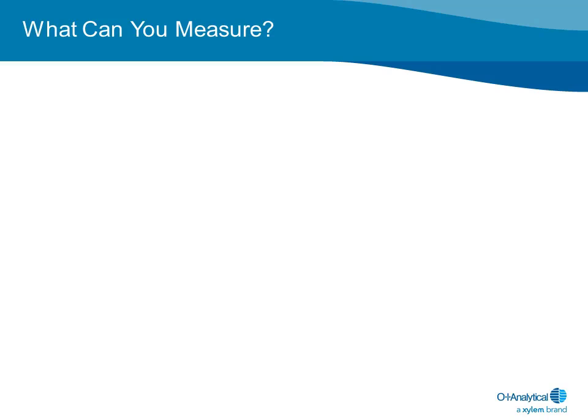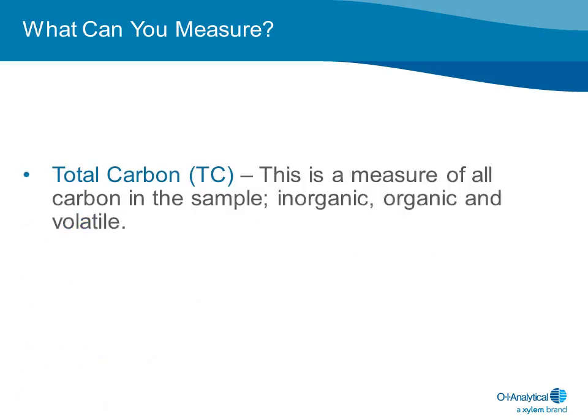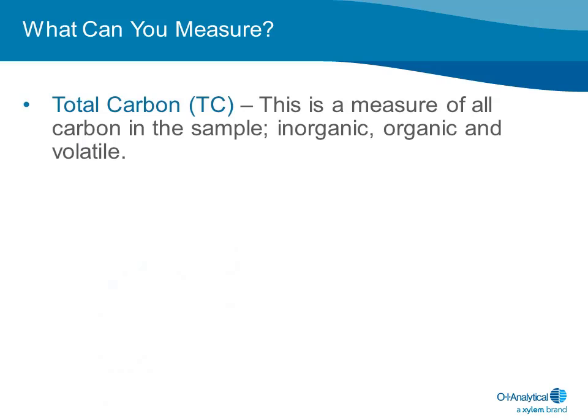What can you measure with a TOC analyzer? Total carbon is the sum of all carbon in a sample and is comprised of three distinct fractions: inorganic carbon, organic carbon, and volatile or purgeable organic carbon. When properly configured, all TOC analyzers can measure total carbon. In some instances, some analyzers must measure total carbon as part of the measurement.